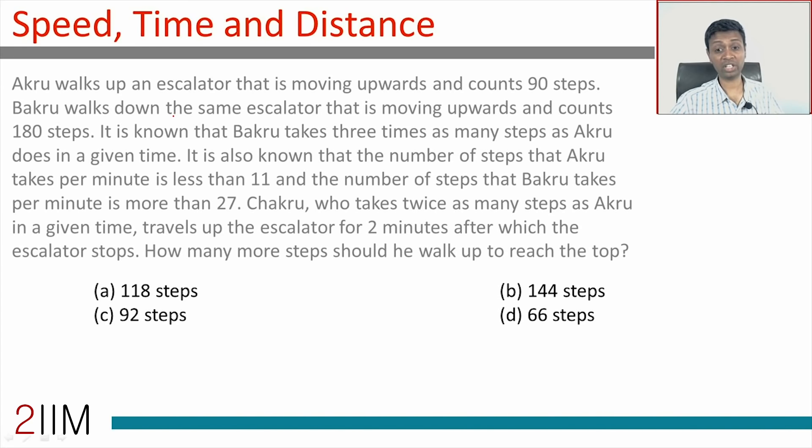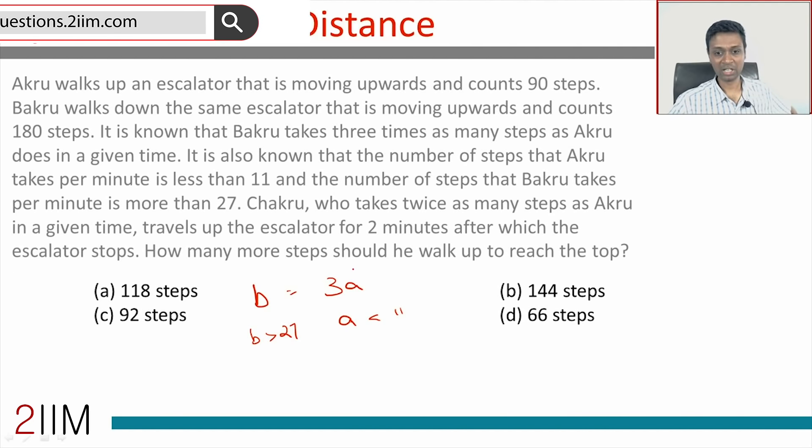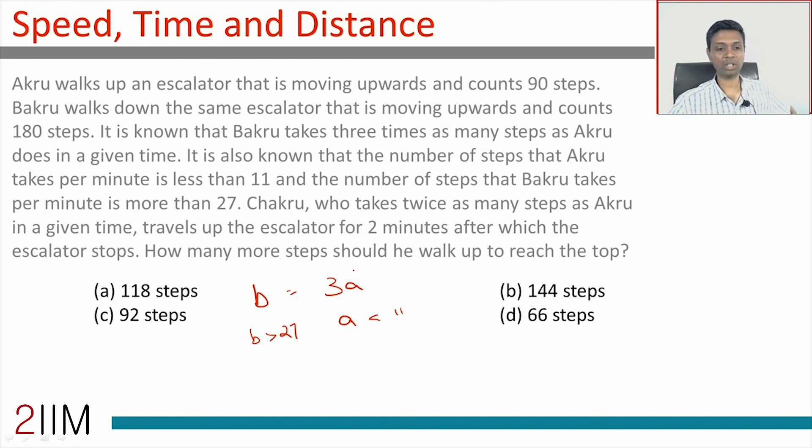It is known that Bakru takes three times as many steps as Akru does in a given time. So Bakru is three times Akru. It is also known that the number of steps that Akru takes per minute is less than 11, and the number of steps that Bakru takes per minute is more than 27. A is less than 11, B is more than 27. Seems like a number systems question.